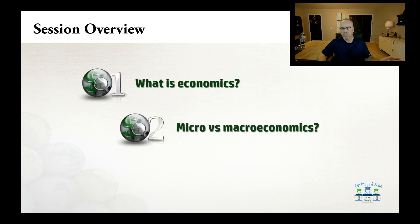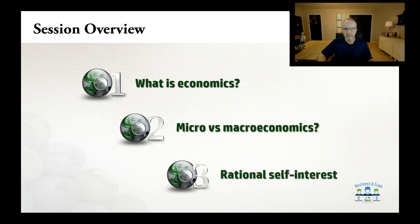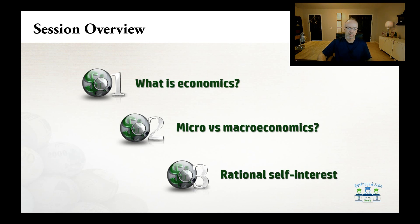Number two, we want to talk about the difference between microeconomics and macroeconomics. You're taking a macroeconomics course here, but you may have already or in the future take a microeconomics course — what is the difference? Then number three, we want to talk about rational self-interest, which has to do with how people make decisions. It's an assumption that's very important to everything we're going to talk about in economics.